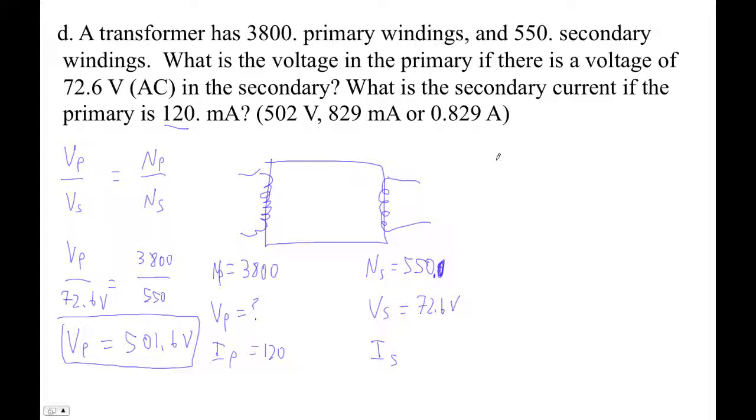So I know that I primary V primary. The power in equals the power out. So the current 0.120. This is milliamps. So that would be amperes. You don't have to do that. It'll work fine if you don't.